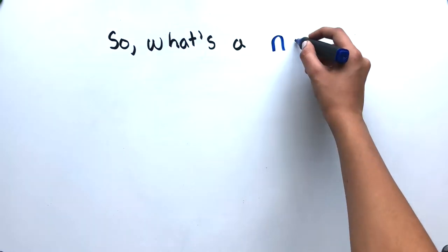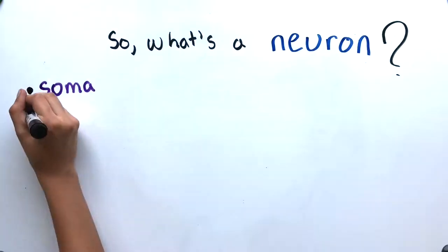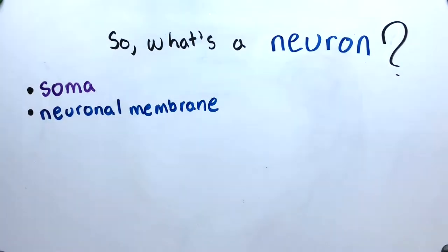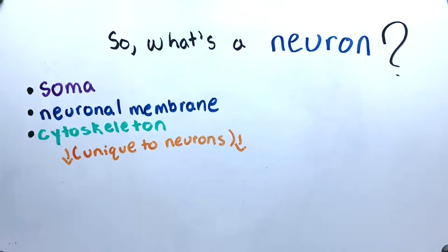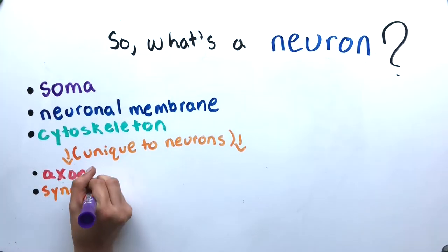This video will cover the fundamental parts of a neuron including the soma, the cell body, the neuronal membrane, the cytoskeleton, the axon, the synapse, and dendrites.